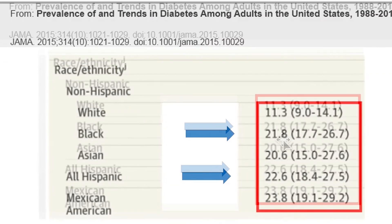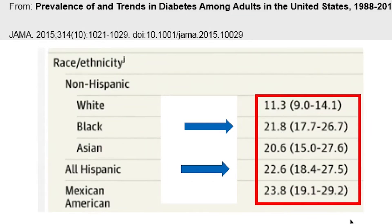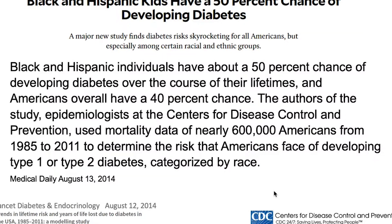A couple of other points. One is the issue about racial patterns and ethnicity. You hear a lot of people talk about how blacks and Hispanics have a significant increase — yes, compared to whites, but not so much compared to Asians or Mexican Americans. Black and Hispanic individuals do have a 50% chance of developing diabetes over the course of their lifetimes, and Americans overall have a 40% chance.